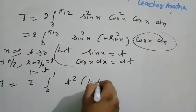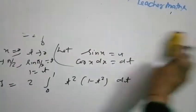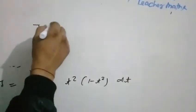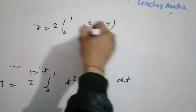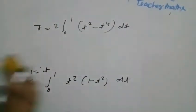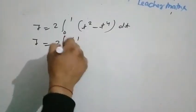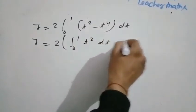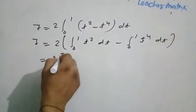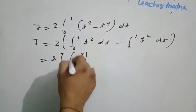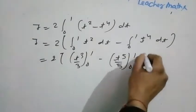I equal to 2 times integration from 0 to 1 of t squared times (1 minus t squared) dt. Expanding: I equals 2 times integration from 0 to 1 of (t squared minus t to the power 4) dt. This gives 2 times [t cube by 3 minus t to the power 5 by 5] from 0 to 1.